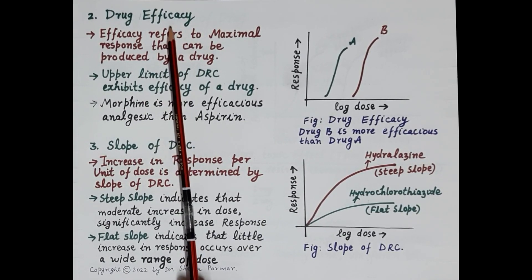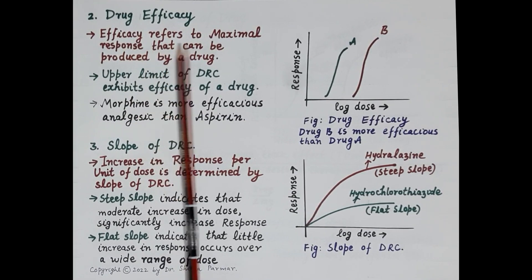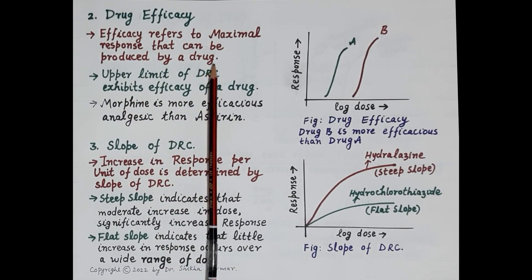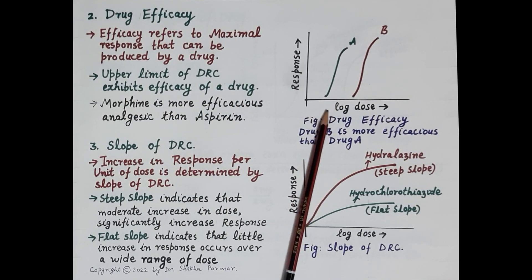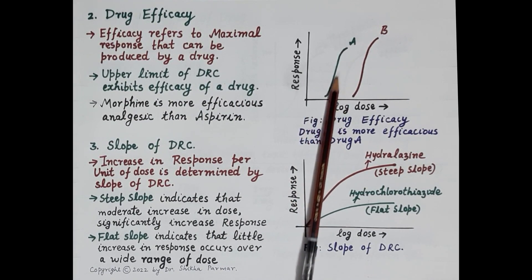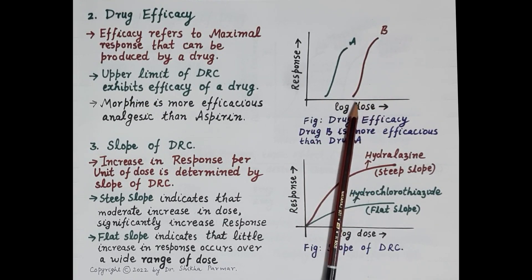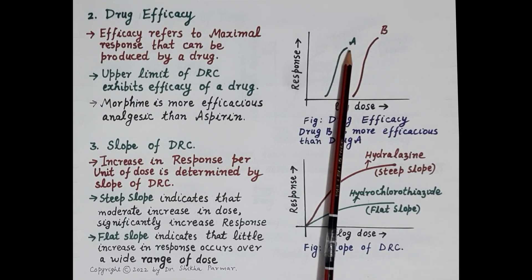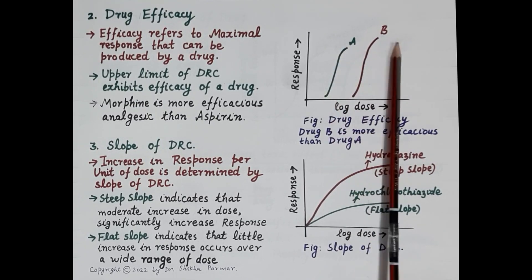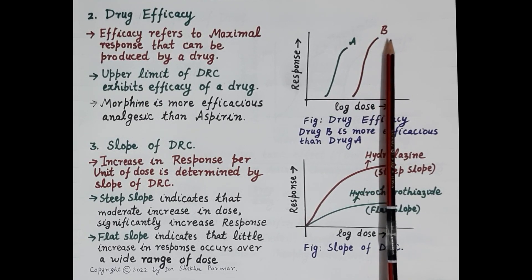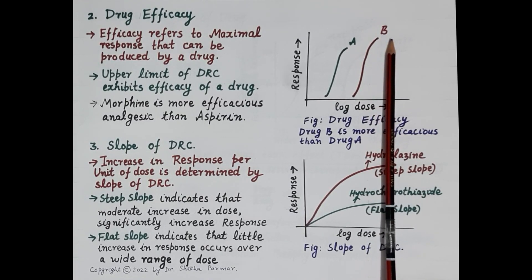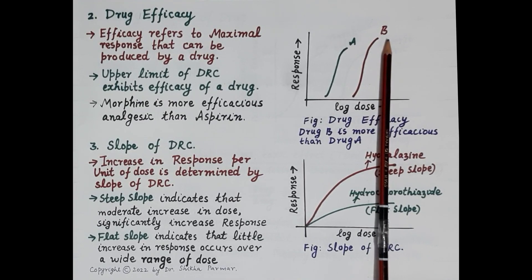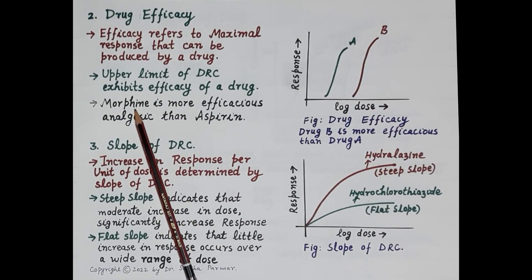After drug potency, let's discuss the role of the dose response curve in predicting efficacy of a drug. Efficacy is the maximal response that can be produced by a drug — the upper limit of the DRC exhibits efficacy. Looking at this graph, the DRC of Drug A and Drug B: Drug A has a certain maximum possible response, while Drug B produces a higher maximum possible response, making Drug B more efficacious than Drug A.